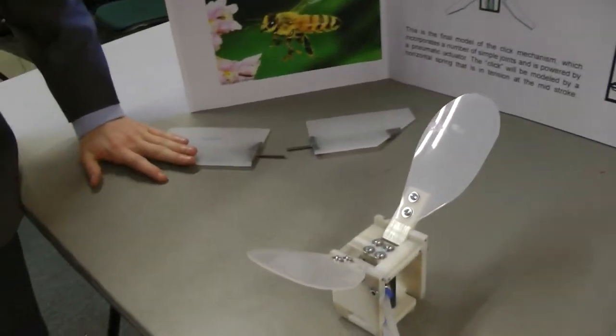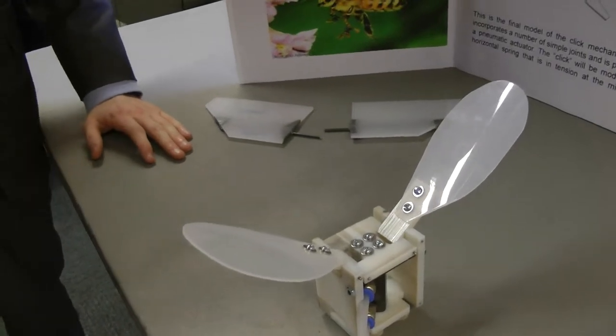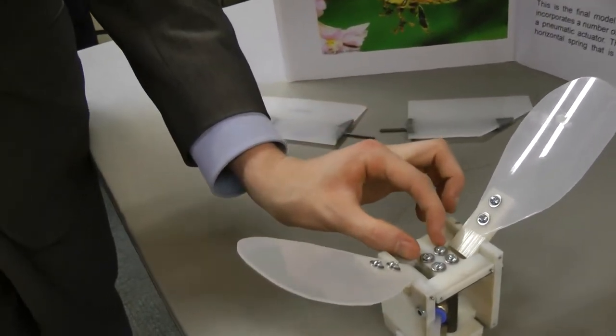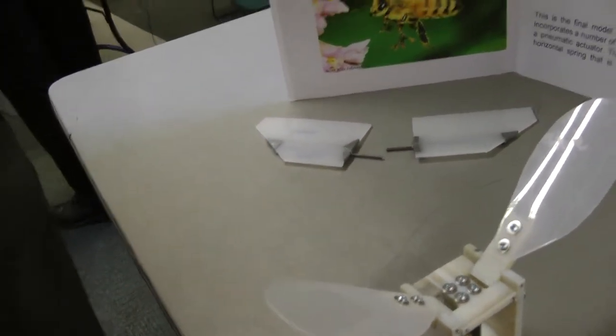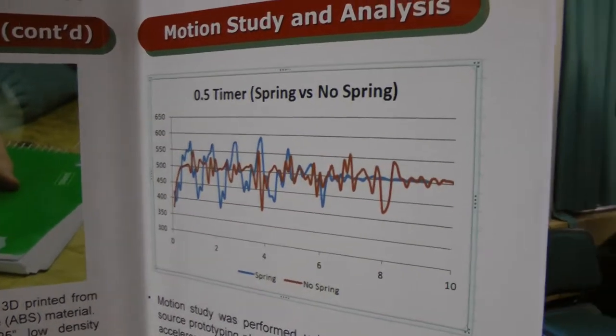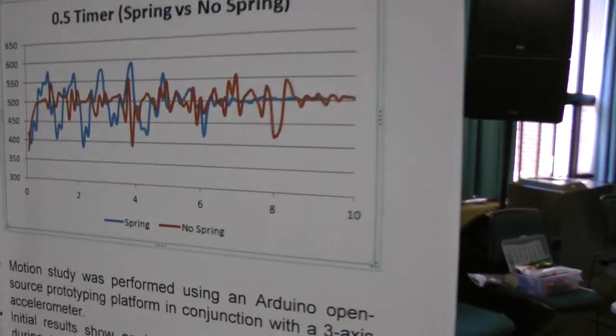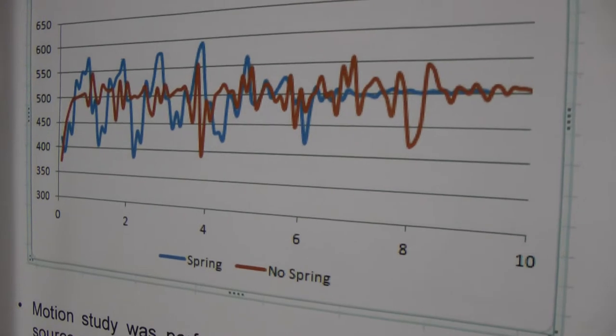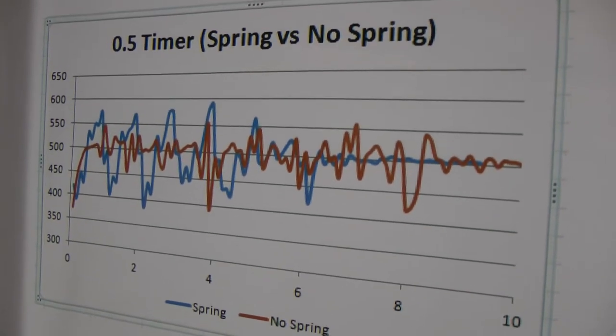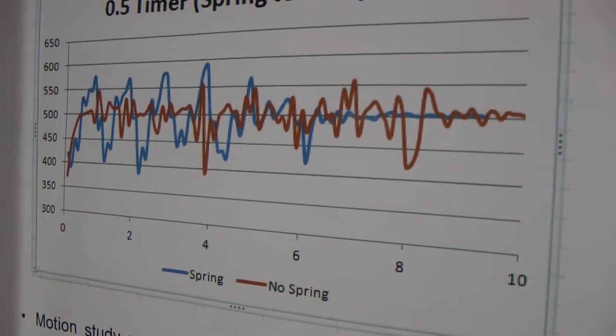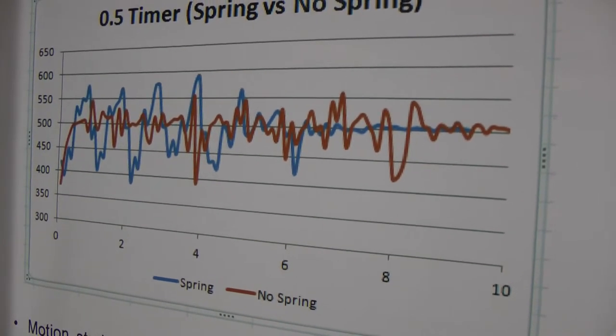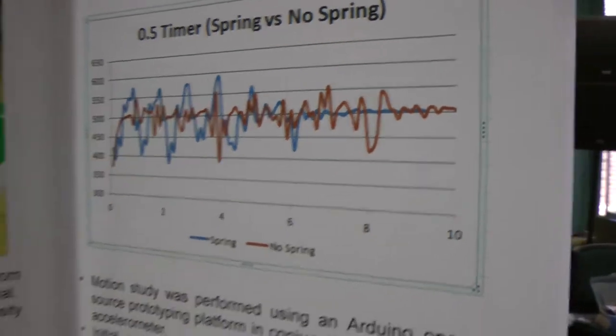As for the motion study, we took a very small accelerometer and attached it right here. It's shown in the graph that having the spring does increase the velocity at the top and the bottom of the stroke, without increasing the frequency. At the same frequency and pressure, having the spring does induce the flight mechanism.